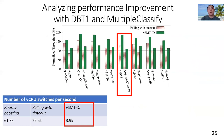Compared with priority boosting, vSMTIO can reduce VCPU switches by 93%. As a comparison, polling with timeout can only reduce VCPU switches by 50%. This implies why vSMTIO can effectively improve IO workload throughput compared with priority boosting and polling with timeout.